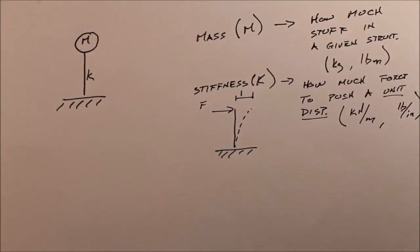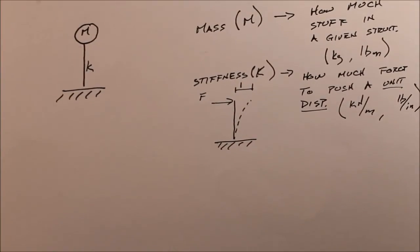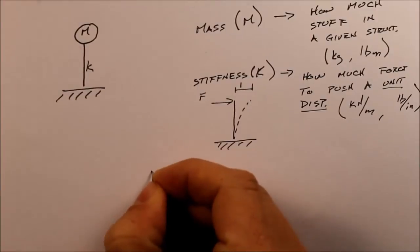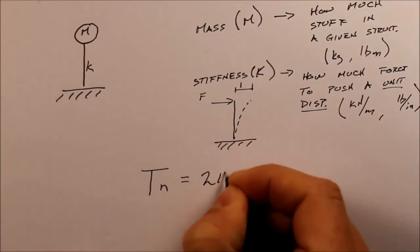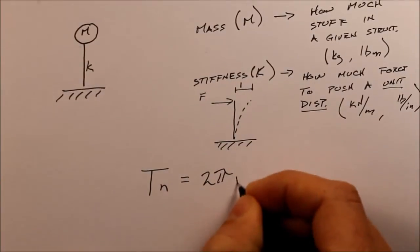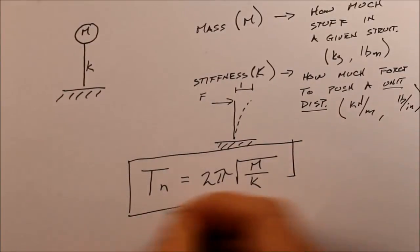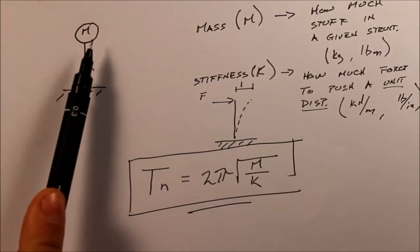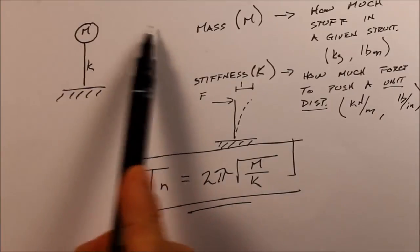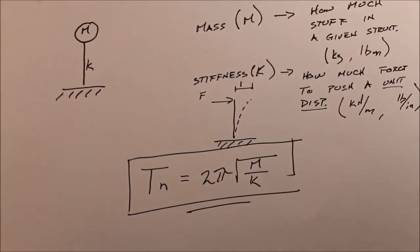Now, if we want to calculate the period, it comes out in a rather elegant equation using just mass and stiffness. And so the calculation for period of a building is just TN equals 2 pi times the square root of m over k. And that's using the simplification of the building as what we call a single degree of freedom system, so it can only move back and forth one way in one degree of freedom with a lumped mass and a lumped stiffness.